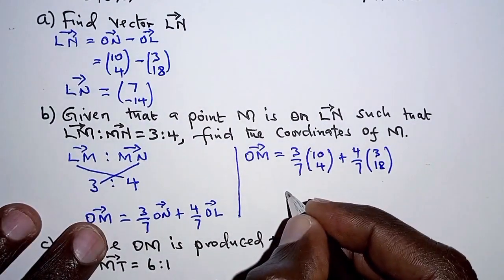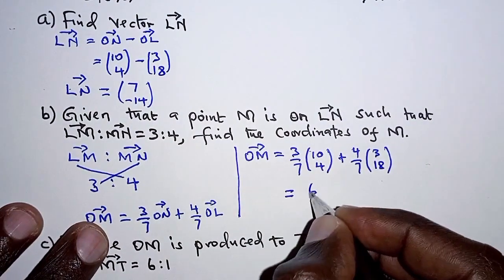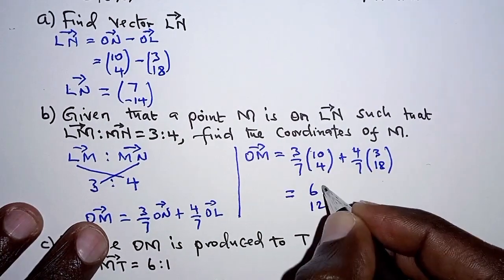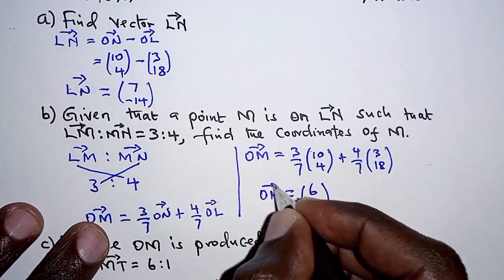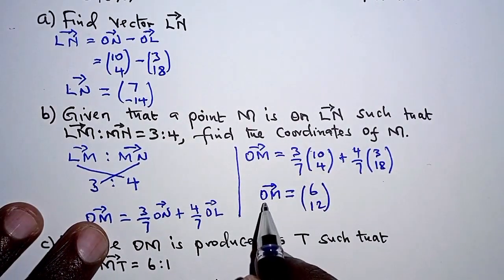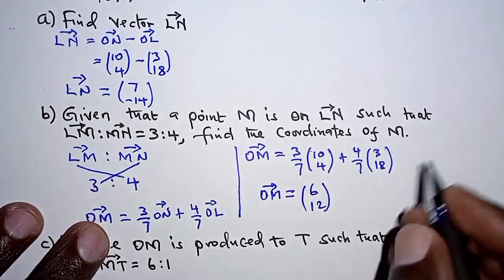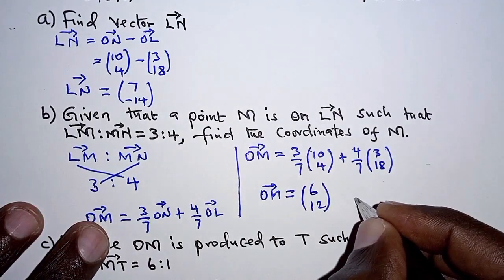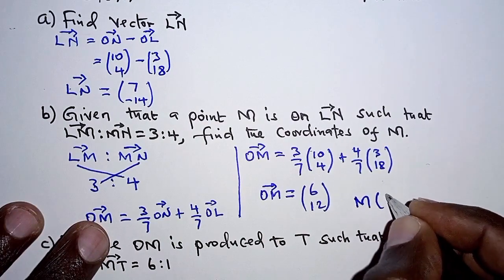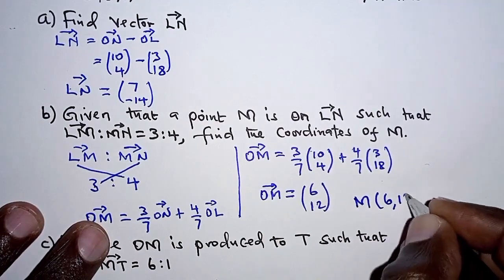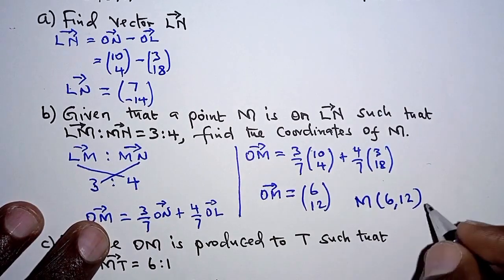Working out these values, we get OM equal to (6, 12). Remember this is the position vector of M, but we are required to determine the coordinates of M. So as coordinates, point M is (6, 12).